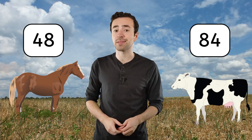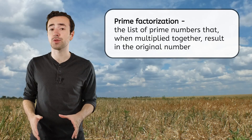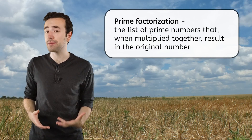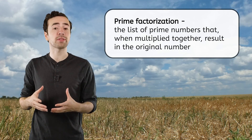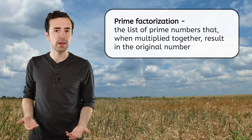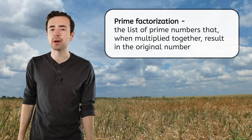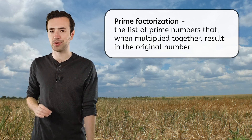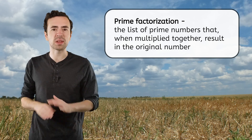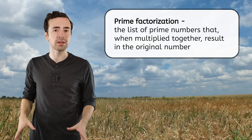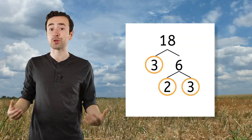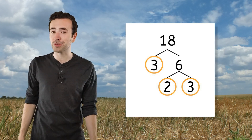You may remember from the last lesson that prime factorization is the list of prime numbers that, when multiplied together, results in the original number. Prime factorization breaks down a number until it cannot be factored anymore. This prevents us from missing any factors when comparing numbers. We can use a factor tree to find the prime factors of a number. Pause here to complete the factor trees to find the prime factorization of 48 and 84 in your guided notes.